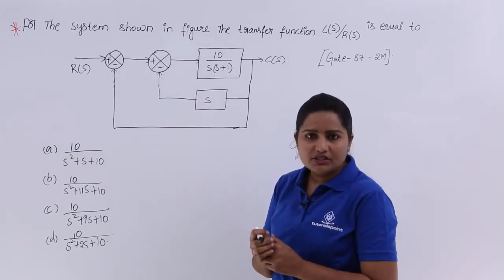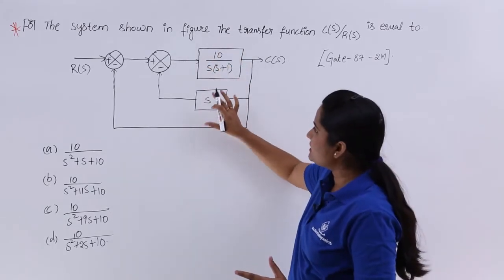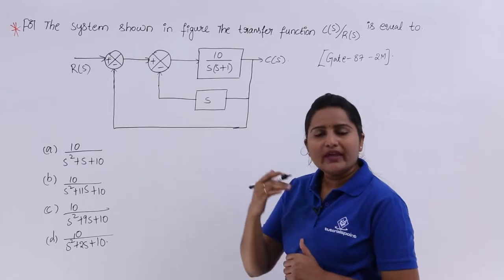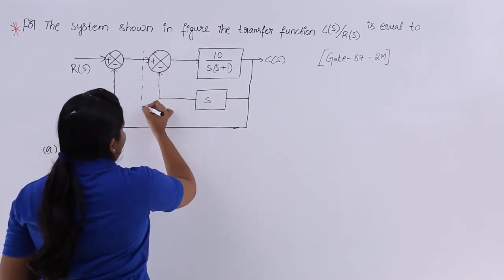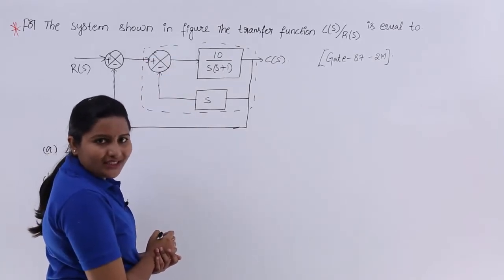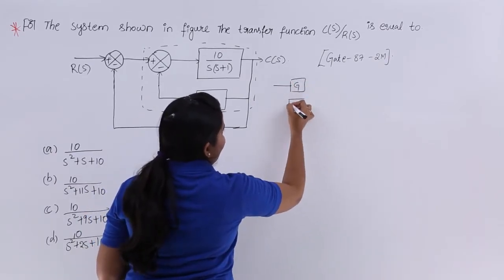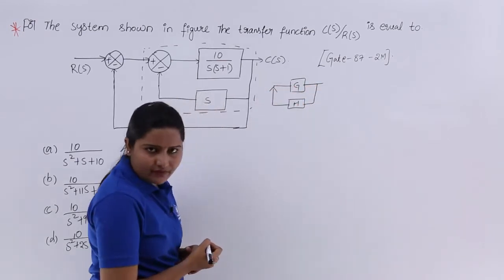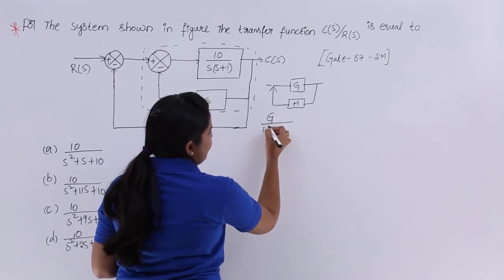If we reduce these two feedbacks, we get the solution — we reduce all feedbacks and the open-loop gain into a single block. For any negative feedback system, if the open-loop gain is G and the feedback gain is H, then the resultant gain of the negative feedback system is G divided by 1 plus G·H. We already derived this formula and will use it to reduce the two blocks.